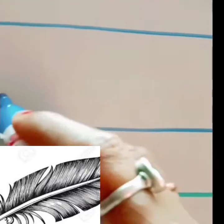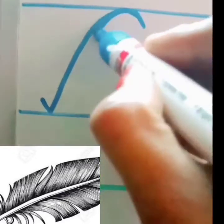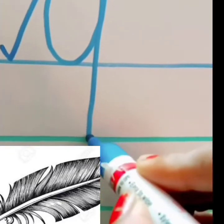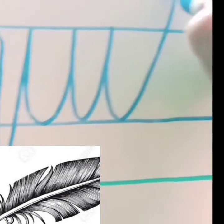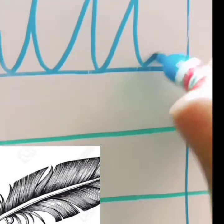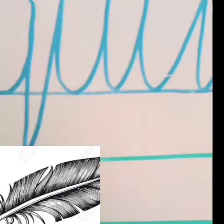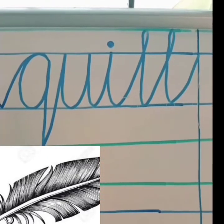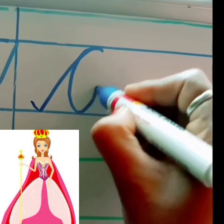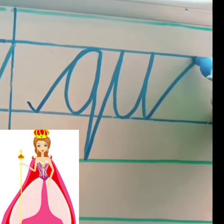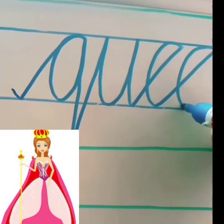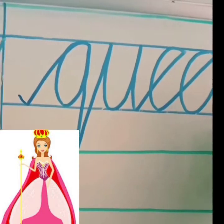After P, Q. Q for quill. Q, U, I, L, L, quill. Also Q for queen. Q, U, E, E, N, queen.